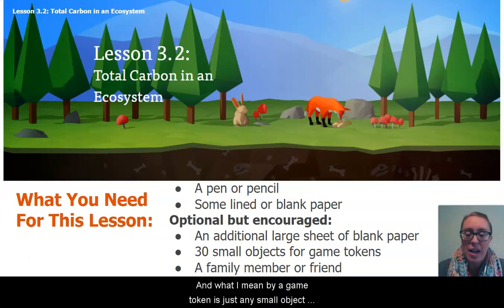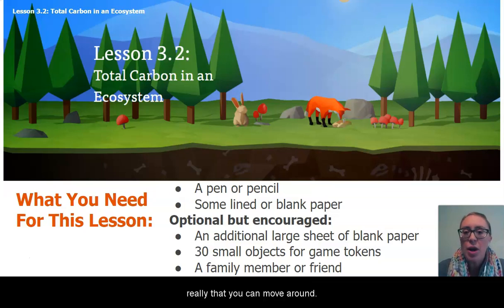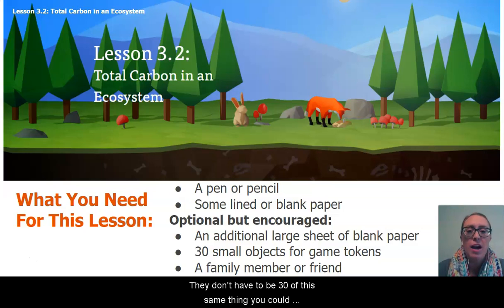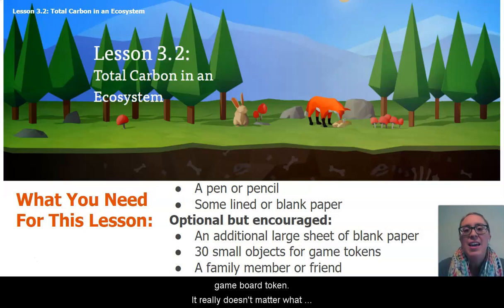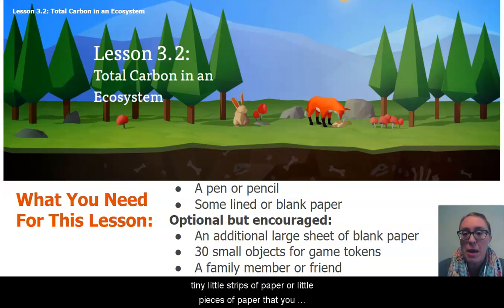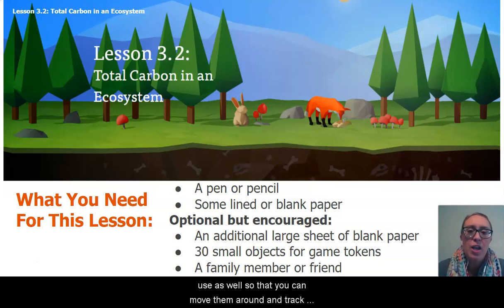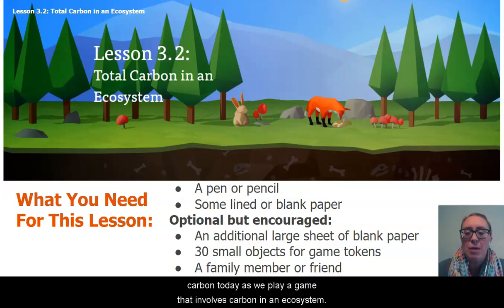What I mean by a game token is just any small object that you can move around. They don't have to be 30 of the same thing. You could have a couple of dice, some Monopoly houses, or any other small game board token. It really doesn't matter what they are. They could also just be tiny little strips or pieces of paper that you use to move around and track carbon today as we play a game that involves carbon in an ecosystem.